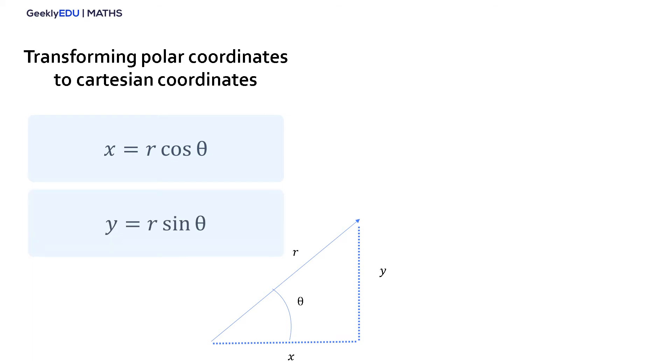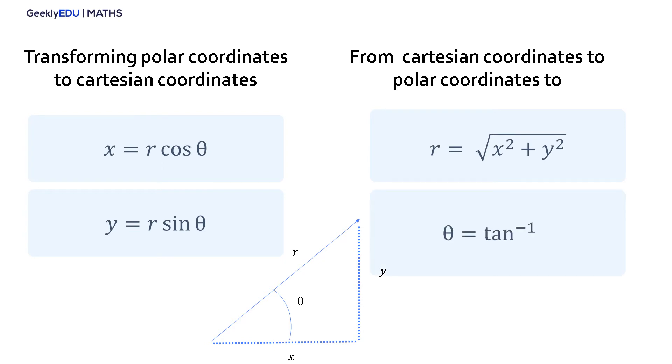And from Cartesian to polar coordinates, we use the Pythagorean theorem, and the value of the hypotenuse, in this case r, is equal to √(x² + y²), and θ is the inverse tangent of y divided by x.